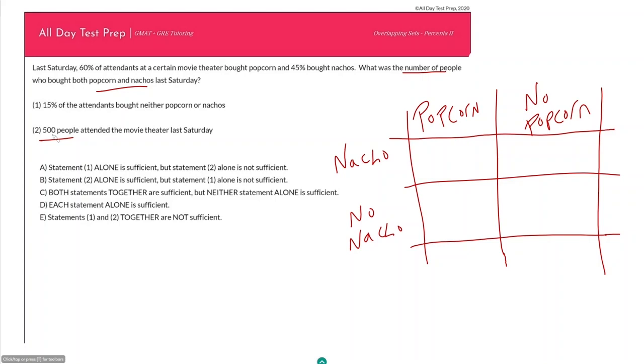And so because of this we are going to have to make accurate translations for each of our boxes. And you have to do this sometimes with these data sufficiency questions - you have to look ahead at the statements to make sure that they give you discrete values.